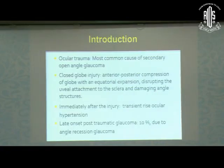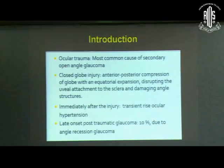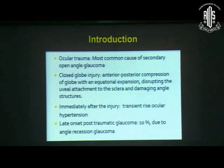Ocular trauma is the most common cause of secondary open-angle glaucoma. Closed-globe injury causes anterior-posterior compression of the globe with equatorial expansion, disrupting the uveal attachments to the sclera and damaging the angle structure. Immediately after this injury, we see a transient rise in intraocular pressure. Later on, we may see glaucoma in 10% of these cases, even 10 years after the injury.